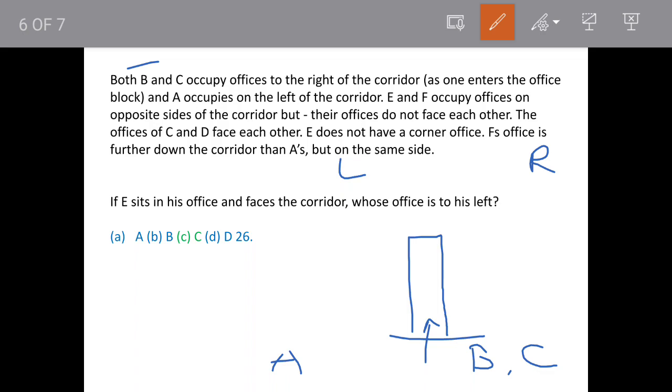E and F occupy offices on opposite sides of the corridor but they don't face each other. Thus C and D are facing each other. So C is here, that means D will be here.